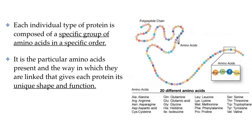There are 20 different amino acids that can be used to make up any protein found, not just in humans, but in every living thing on Earth. Each type of protein is made up of a specific group of those 20 amino acids, bound to each other in a very specific order.